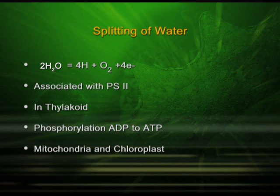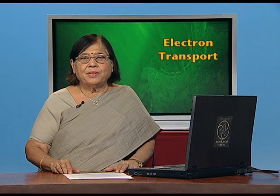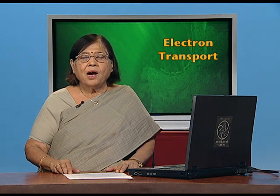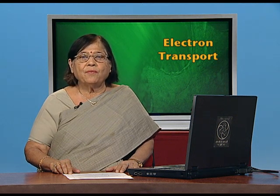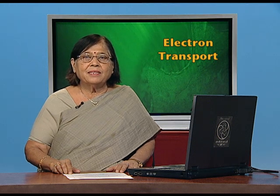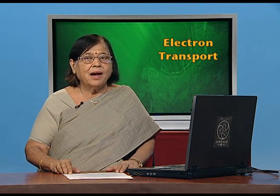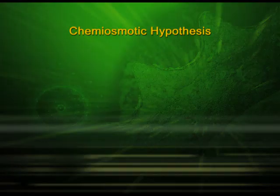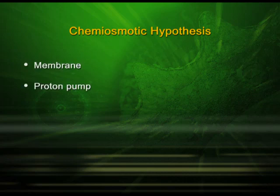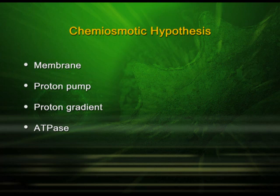Now we move forward to the chemo-osmotic hypothesis — what it is about and how it works. We know the final aim is to produce ATP and of course oxygen. This is happening in the thylakoid, so the thylakoid membrane is involved, the proton pump is involved, a proton gradient is involved, and of course the enzyme ATPase is involved, which will convert ADP to ATP.